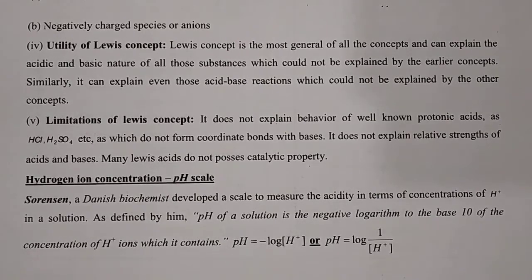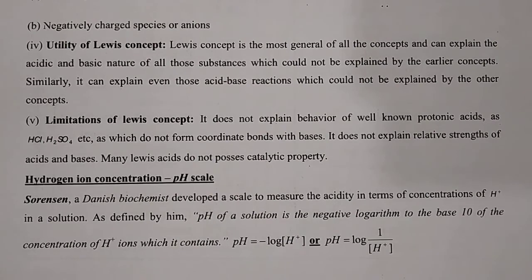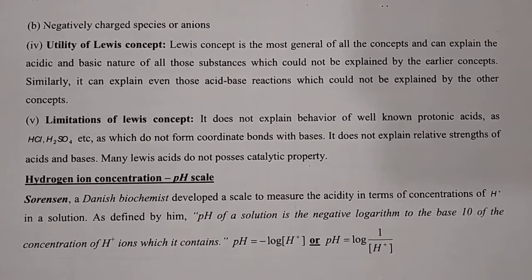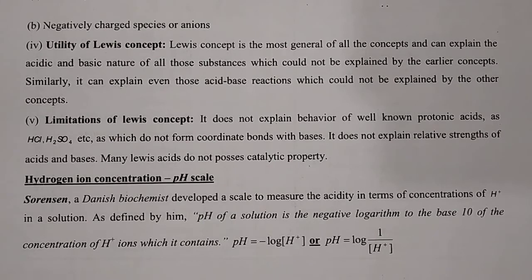Hi friends, in this session we will start with pH. This pH word is really very familiar. Whenever we hear the word acid, we remember pH. pH for acidic condition is less than 7, for basic condition it is always greater than 7. The pH range is 0 to 14, where 0 to 7 is acidic and 7 to 14 is basic.